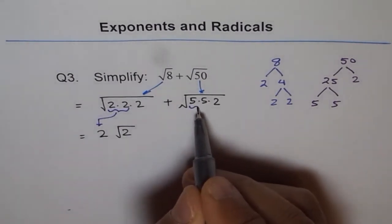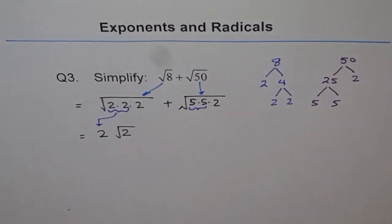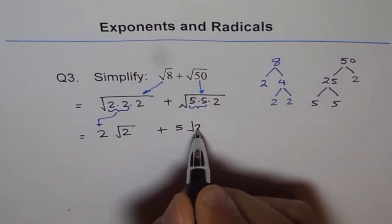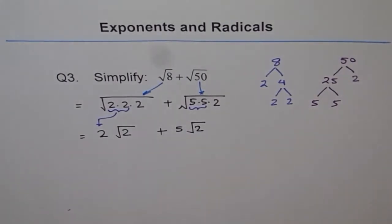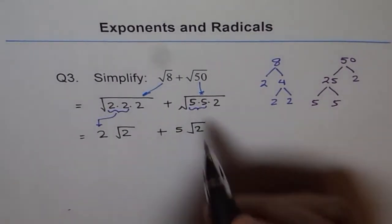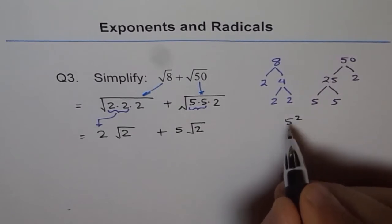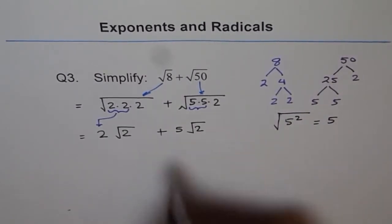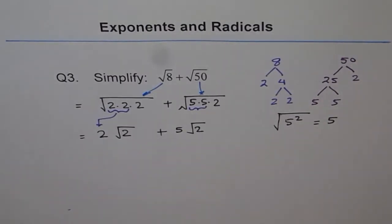Similarly, I can pull out 5. Square root of 5 square is 5. That is the reason. So this becomes plus 5 square root 2. Do you get it? 5 times 5 is like 5 square, and square root of 5 square is 5. And that is the reason I pulled out 5 from the square root.